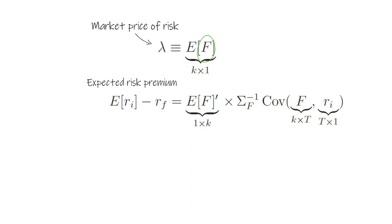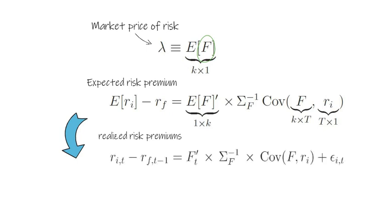Now realized risk premiums of asset I, they deviate from expectation. And here is what the realized risk premiums look like. They also consist of two components.